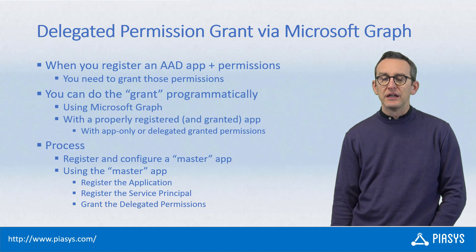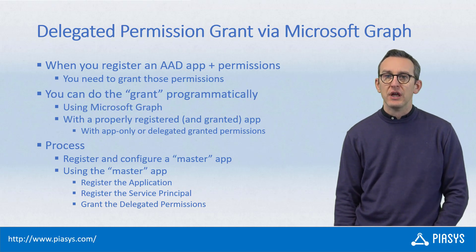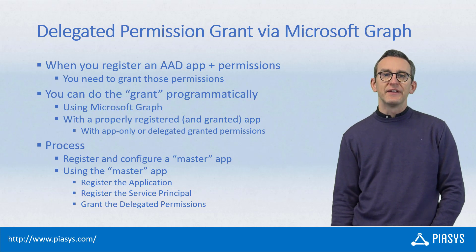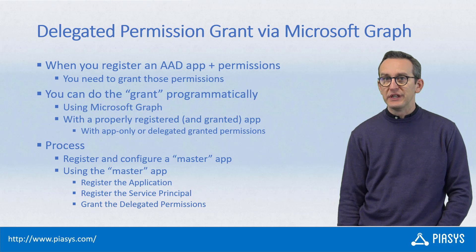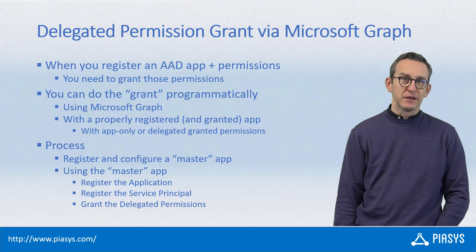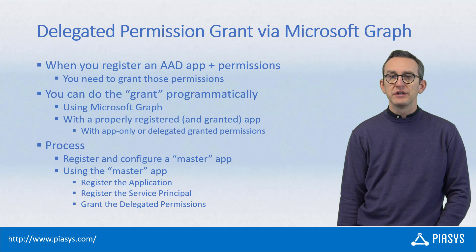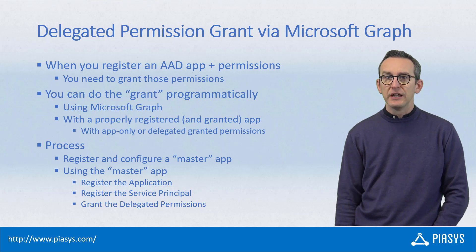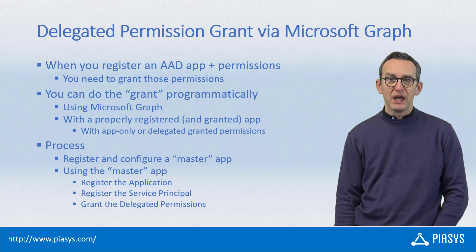In order to do that, you simply need to first register a kind of master application which will have proper permissions to register other applications in your Active Directory tenant, and it could even be a multi-tenant application. Once you have registered that master application, you can use it to register any other application in Azure Active Directory and to grant the permissions to the registered apps using just the Microsoft Graph APIs.